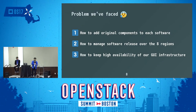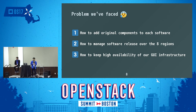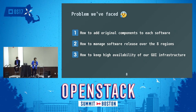We faced basically three problems in our development, and this is the main content of this presentation. The first problem is how to add original components to each software — CLI, GUI, and SDK. At first, we only developed the GUI part, but soon started developing the command line interface and SDK as well. We realized we had to take many aspects into consideration to handle all components across all three software tools.